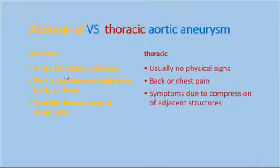For the abdominal aneurysm, you see a pulsatile abdominal mass. Do not palpate the mass. There is pain or tenderness in the abdomen, back, or flank depending on the location. There is always the possibility of hemorrhage and symptoms of shock. The abdominal aortic aneurysm is most commonly below the renal arteries. The impingement of the mass can extend into the renal, iliac, and mesenteric arteries.